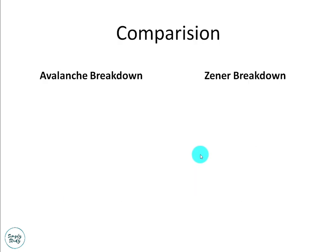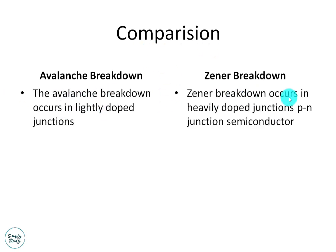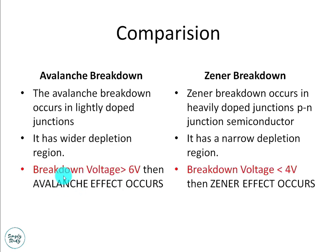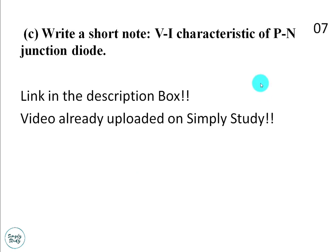In comparison: avalanche breakdown occurs in lightly doped junctions whereas Zener breakdown occurs in heavily doped junctions. Avalanche breakdown has a wider depletion region whereas Zener breakdown has a narrow depletion region. Avalanche effect occurs when the breakdown voltage is greater than 6 volts, and Zener effect occurs when the breakdown voltage is less than 4 volts. Question 1C asks to write a short note on the VI characteristic of a PN junction diode.